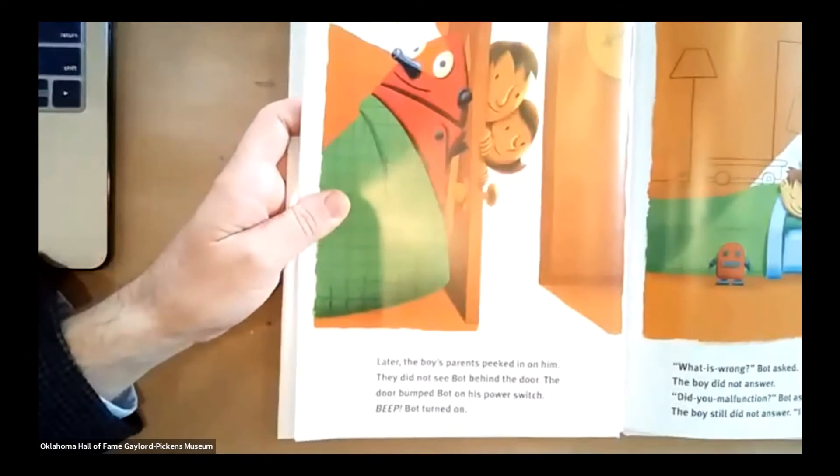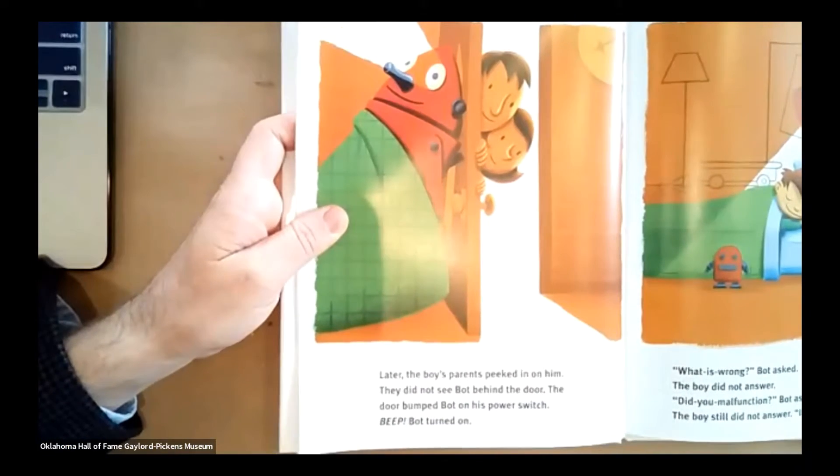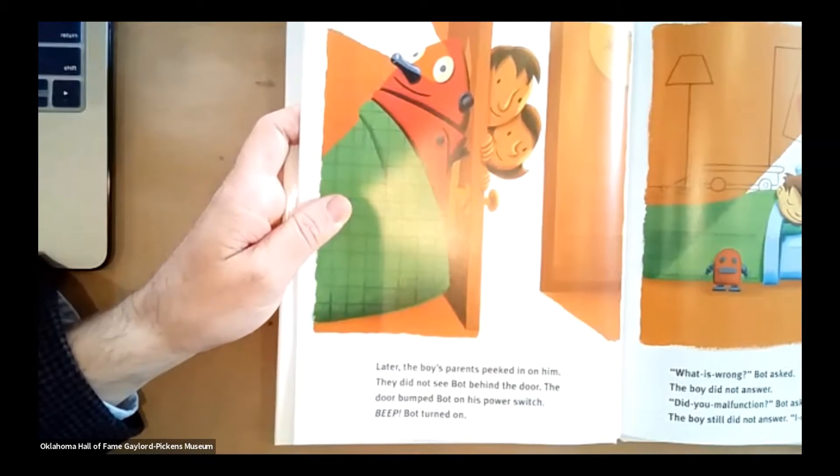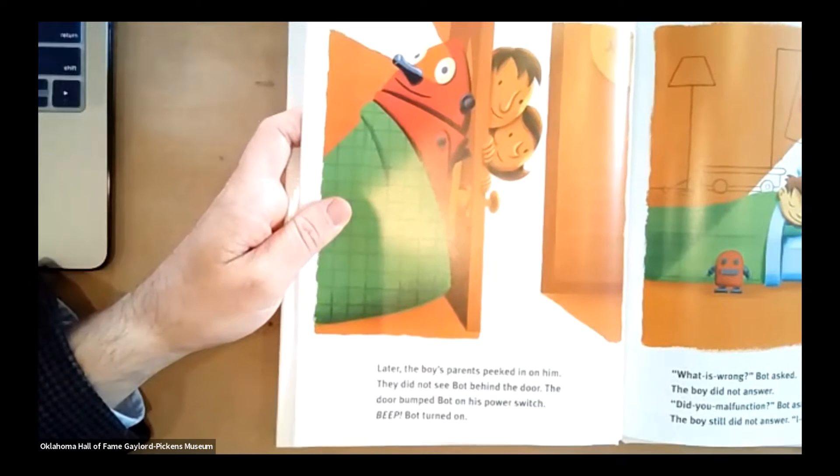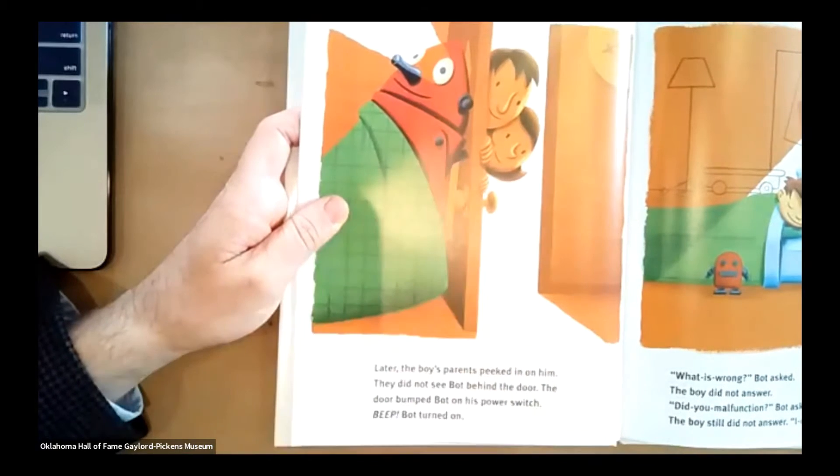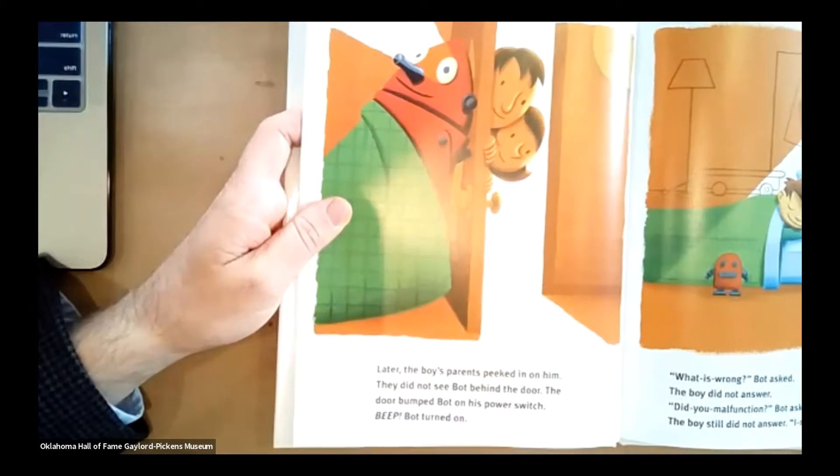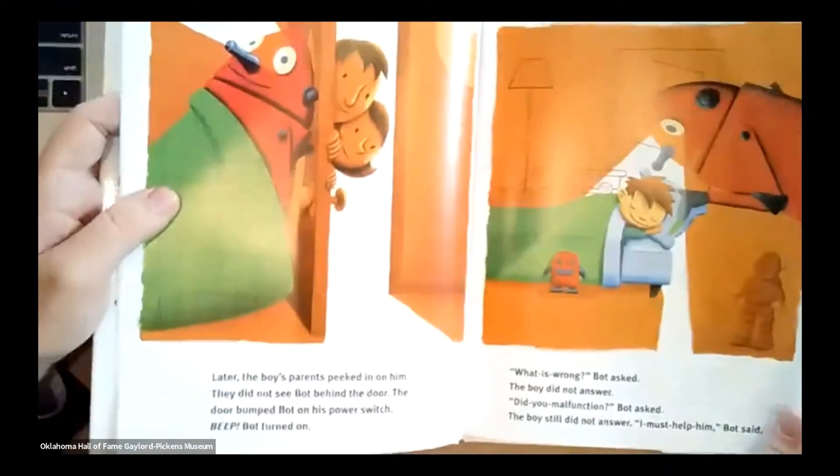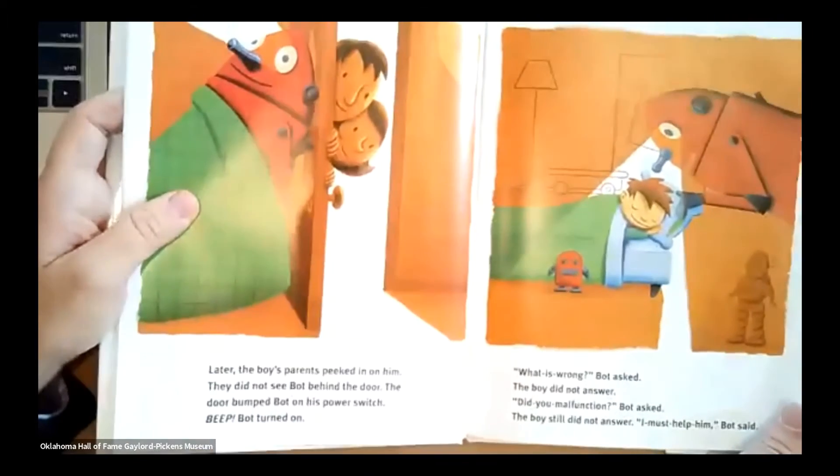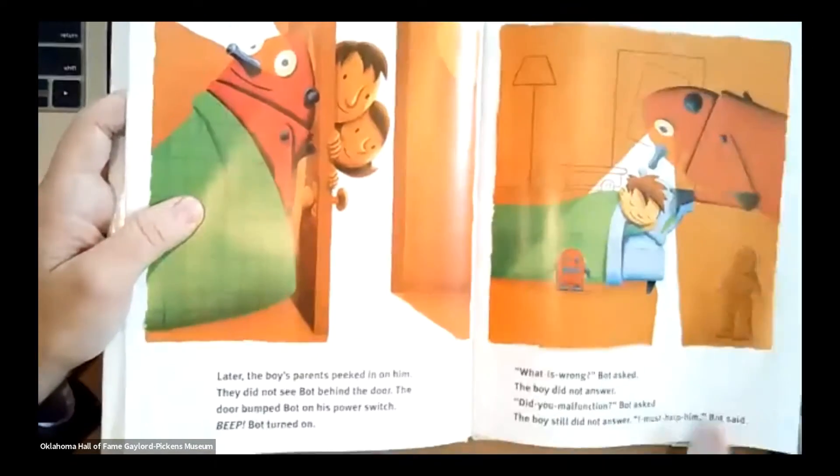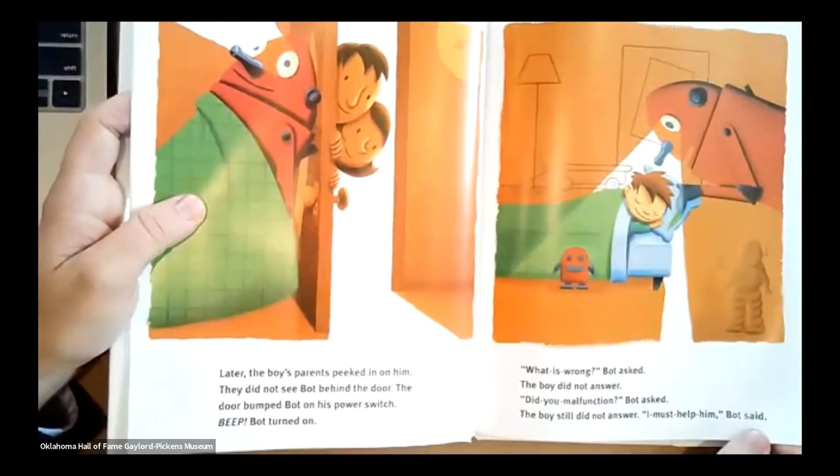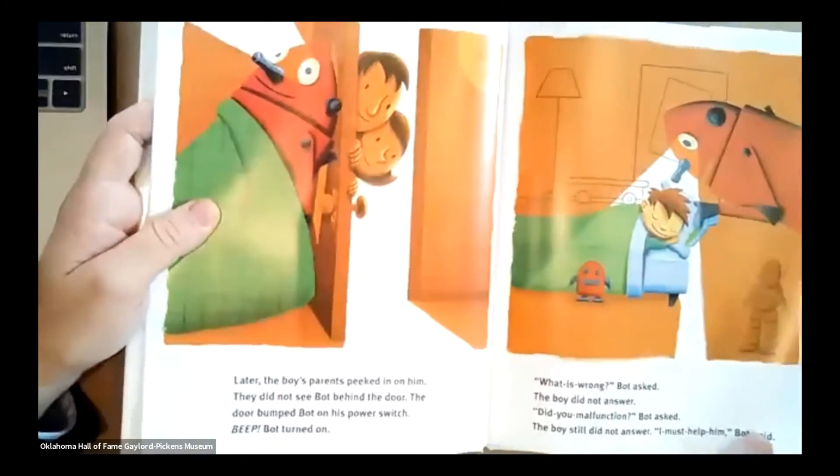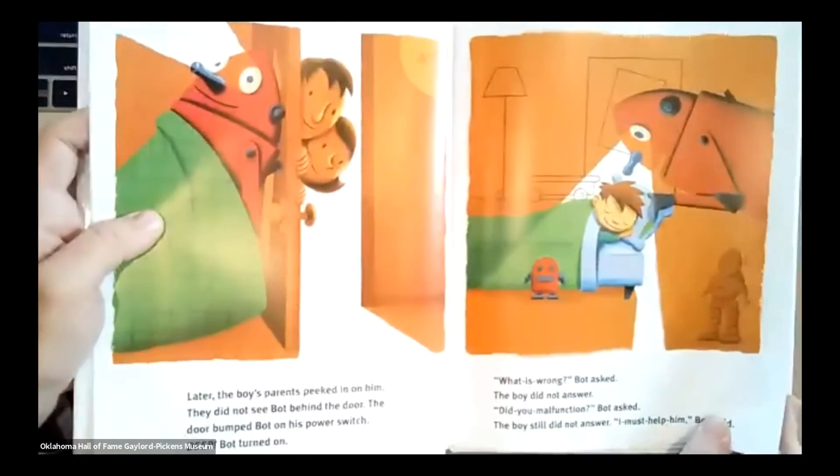Later, the boy's parents peeked in on him. They did not see Bot behind the door. The door bumped Bot on his power switch. Oh, you see? Beep. Bot turned on. What is wrong? Bot asked. The boy did not answer. Did you malfunction? Bot asked. The boy still did not answer. I must help him, Bot said. Hmm. How's Bot going to help boy?